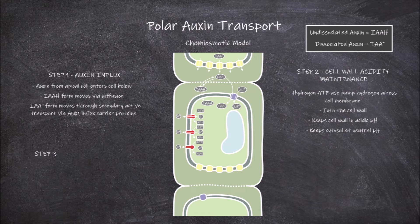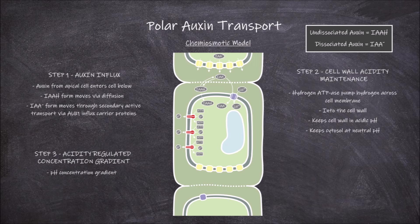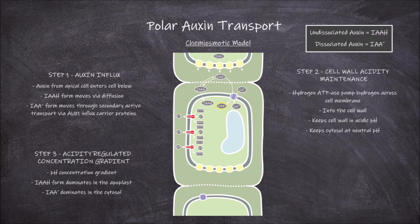The third step is the acidity-regulated concentration gradient. The high acidity in the apoplast and neutral pH in the cytosol create a pH concentration gradient. The high acidity of the apoplast — which is the space between the cell membrane and cell wall — means the undissociated form dominates there. The neutral pH of the cytosol means the dissociated form is dominant there.